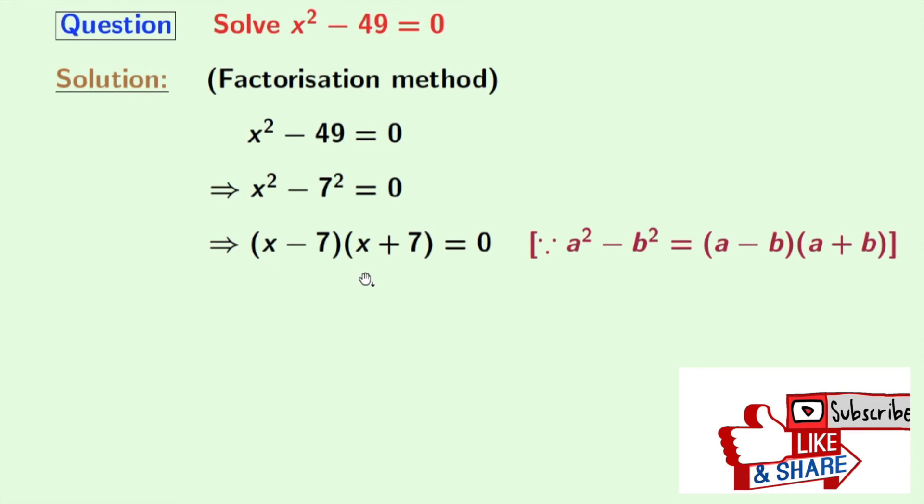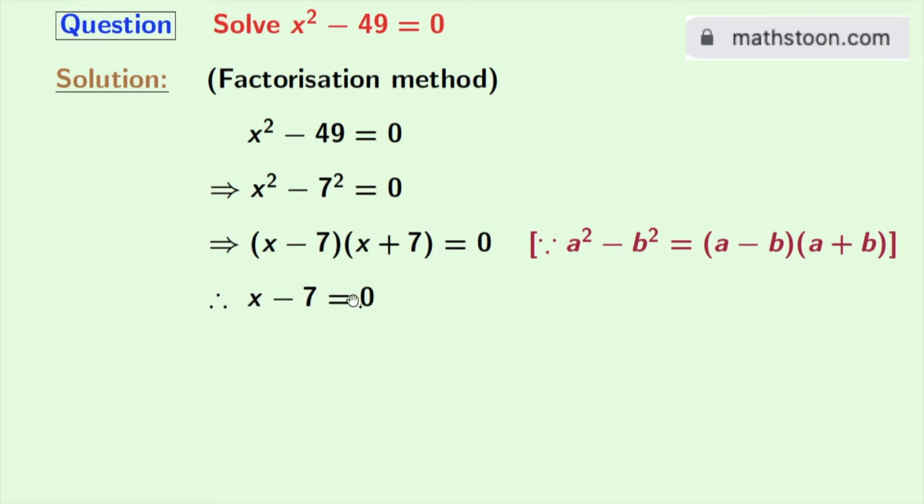Now we all know that if the product of two numbers is 0 then the value of either of these numbers individually will be 0. So either x minus 7 is equal to 0 or x plus 7 is equal to 0. From this we get x is equal to 7 and from this we get x is equal to minus 7.